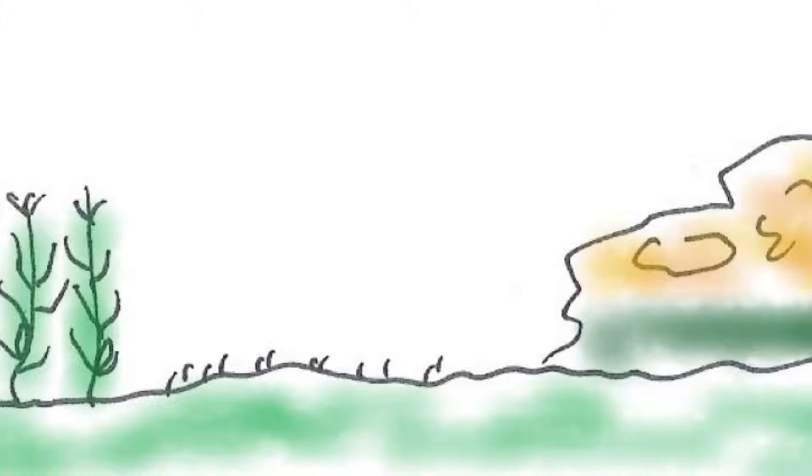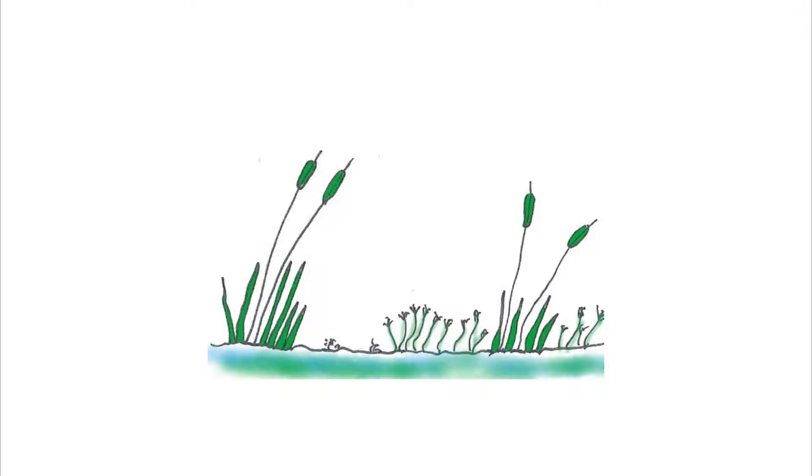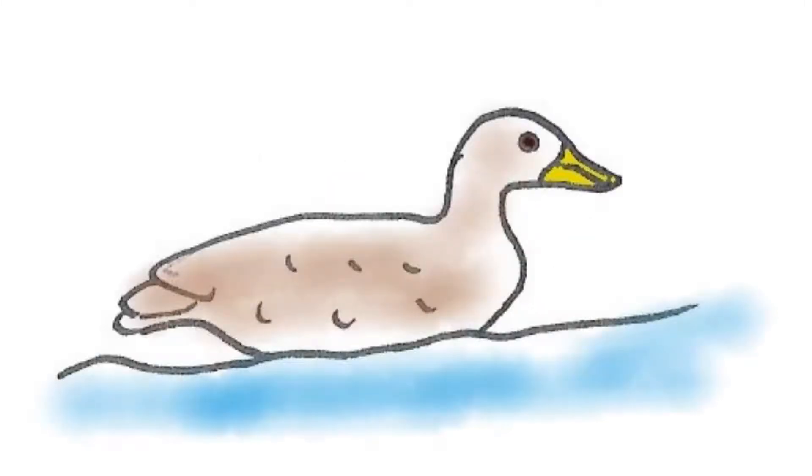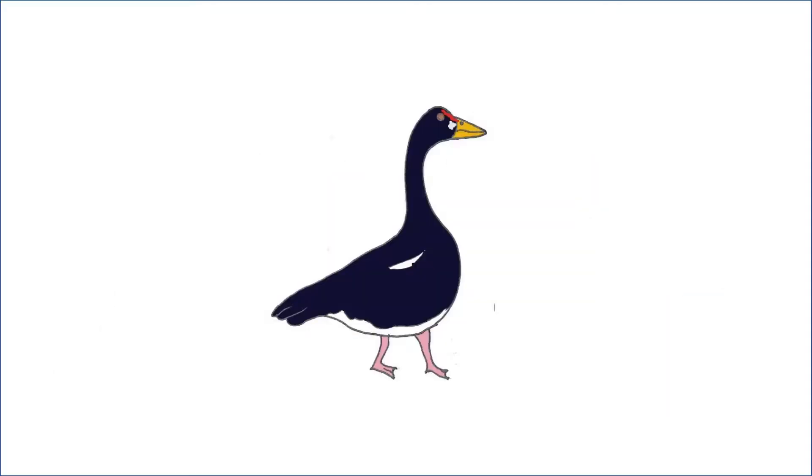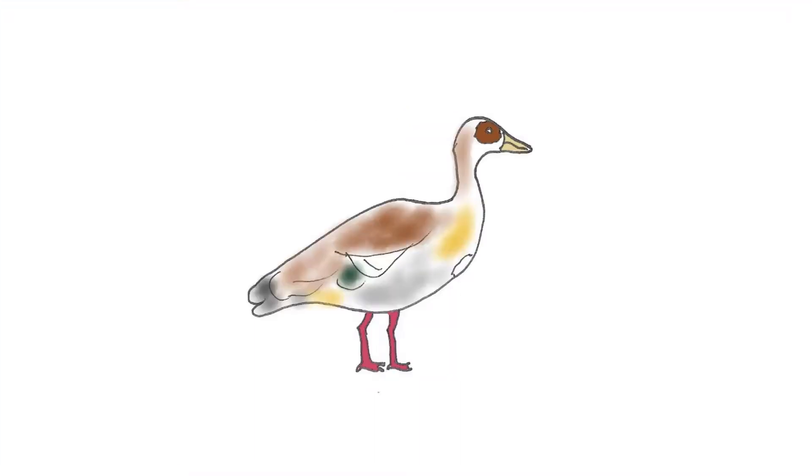Sipo and Samuel went out to a dam on the farm after the cattle were herded into another camp. The dam always has lots of geese and ducks. Why are there so many birds in this dam? asked Sipo.